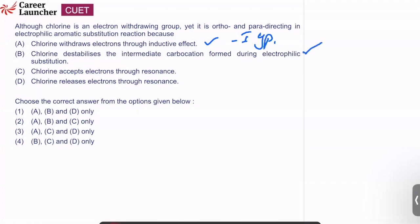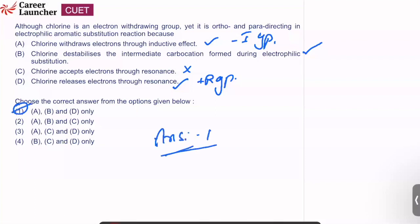Option C: chlorine accepts electrons through resonance — that is the wrong answer, because chlorine is a plus-R group, so it releases electrons through resonance. So A, B, D are the correct answers. Choosing the correct answer from above, the answer is option 1. This is a moderate question from haloalkanes, because if you don't know the proper concept, you can't answer it well.